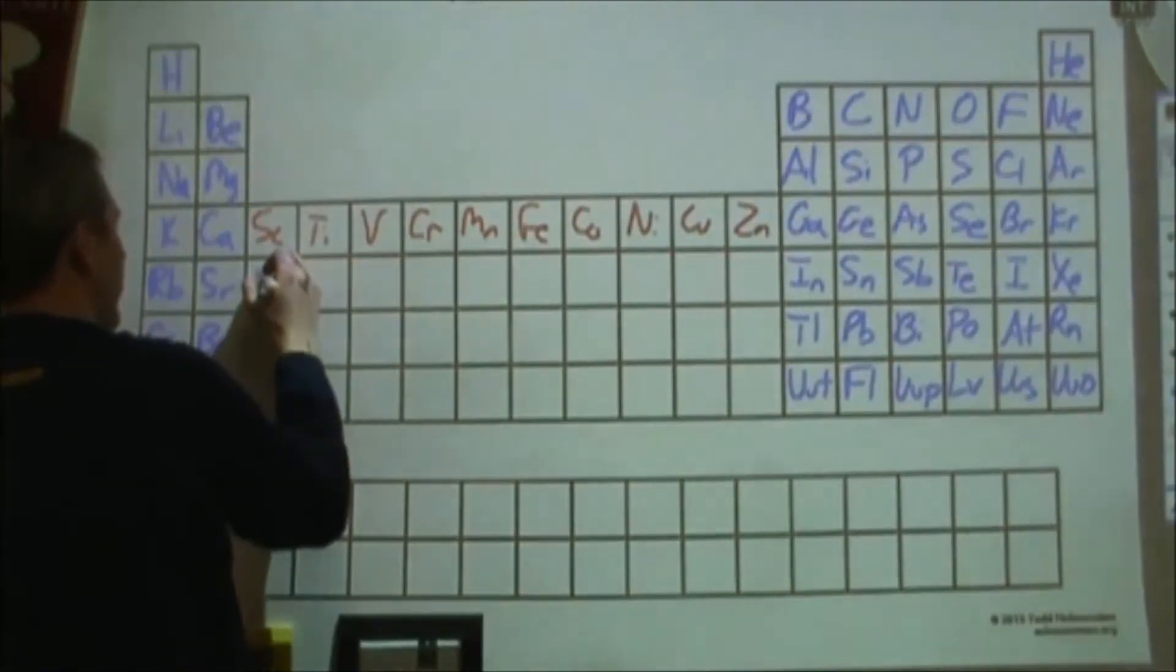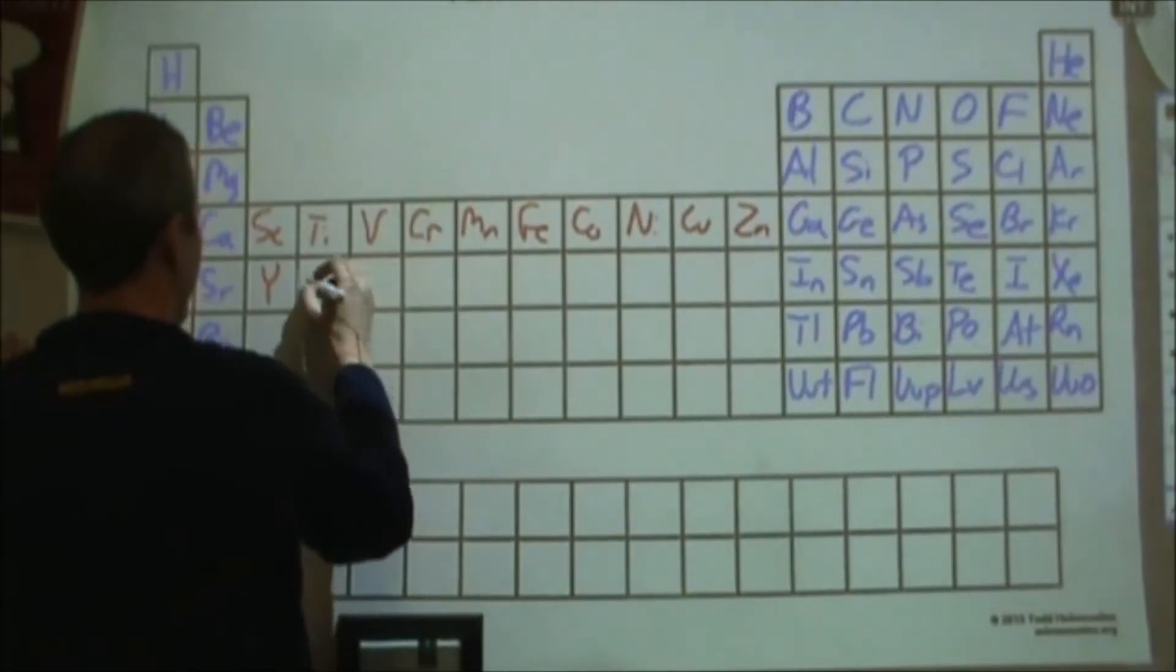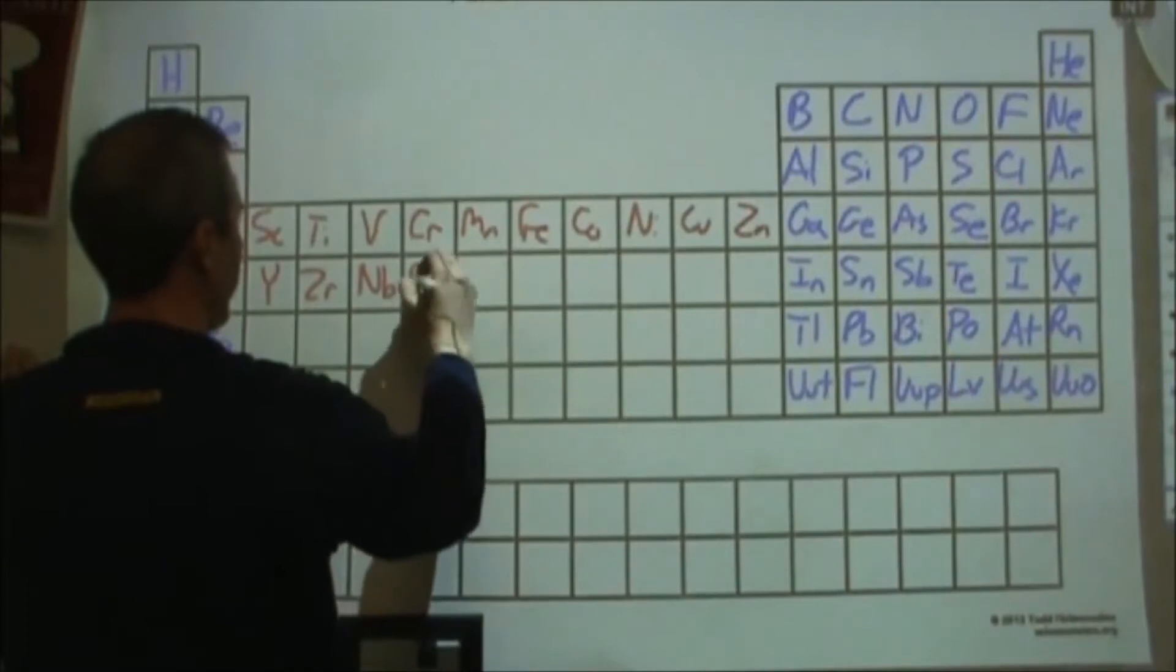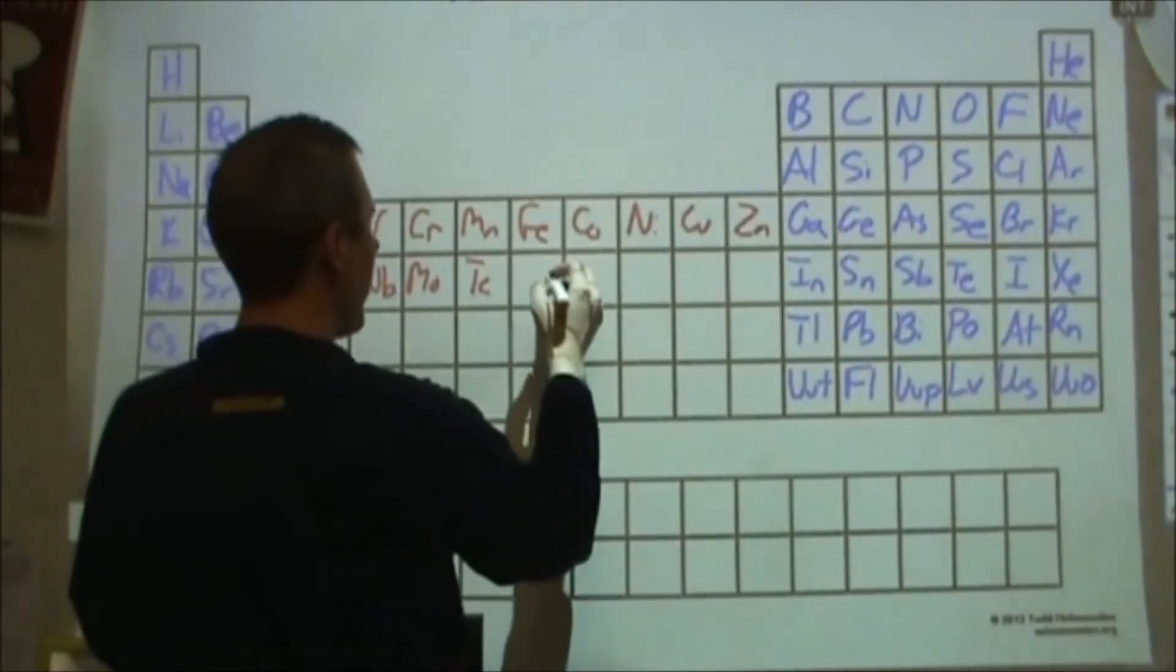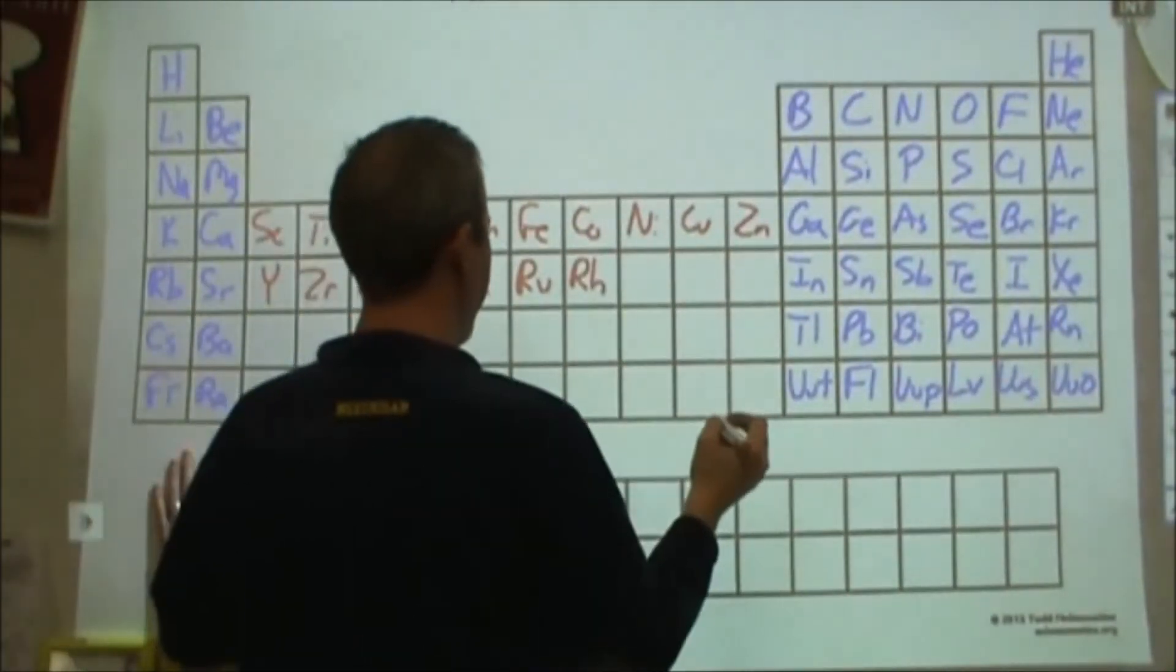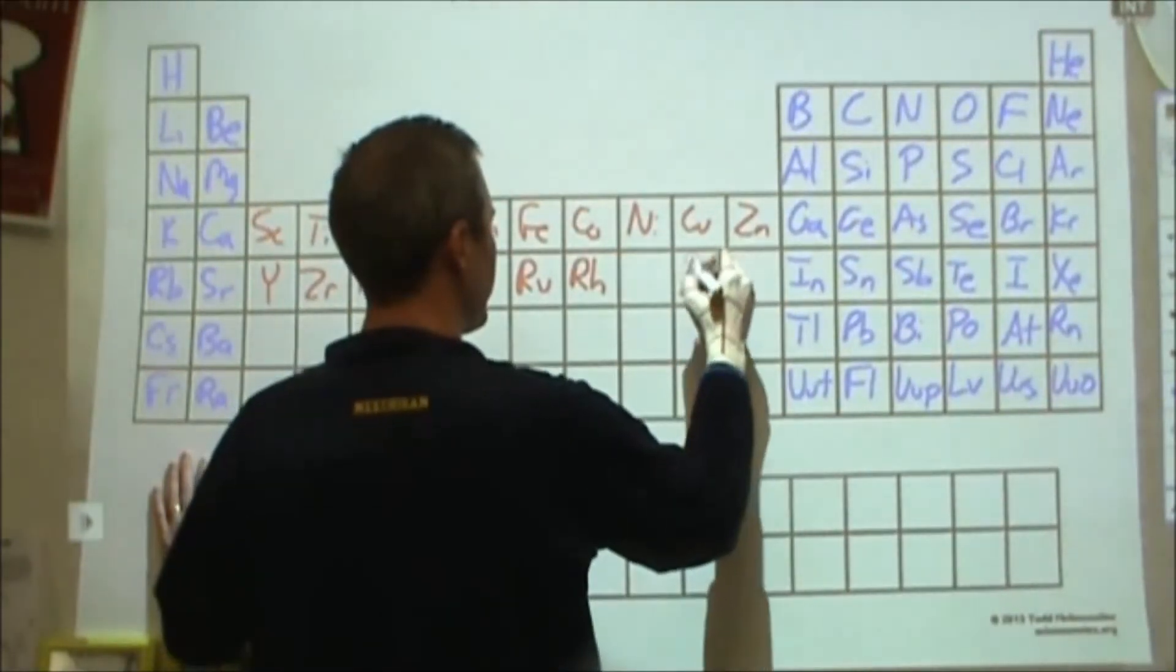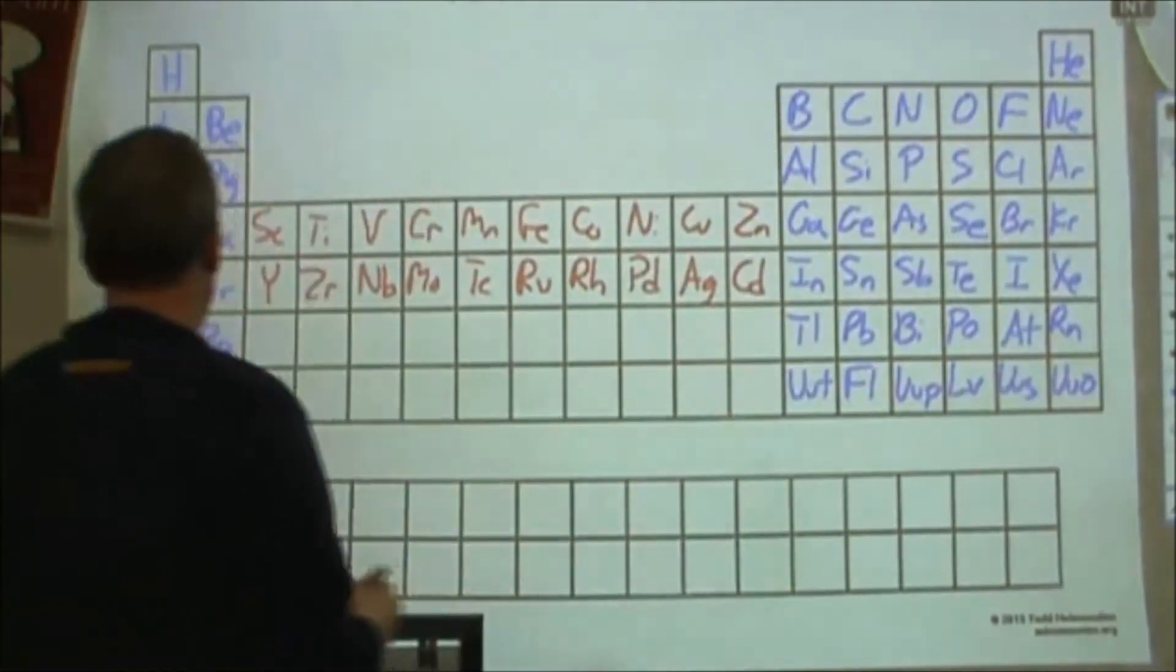And then we're going to have yttrium, and then zirconium, niobium, and then we're going to have molybdenum, technetium, number 43. And then we're going to follow that with ruthenium, rhodium, silver here, palladium there, and cadmium there.